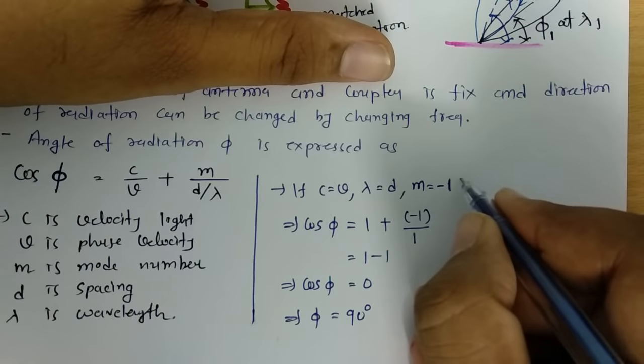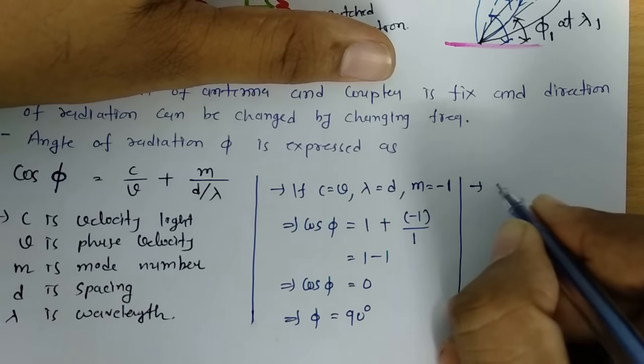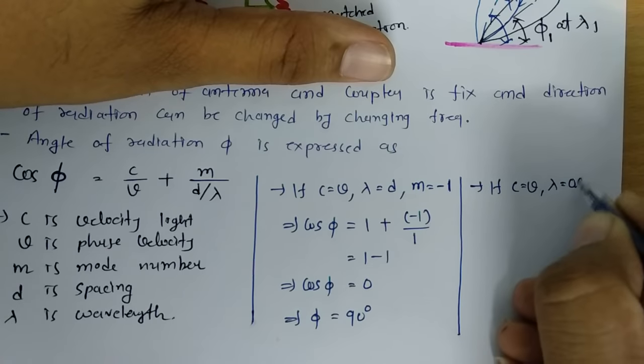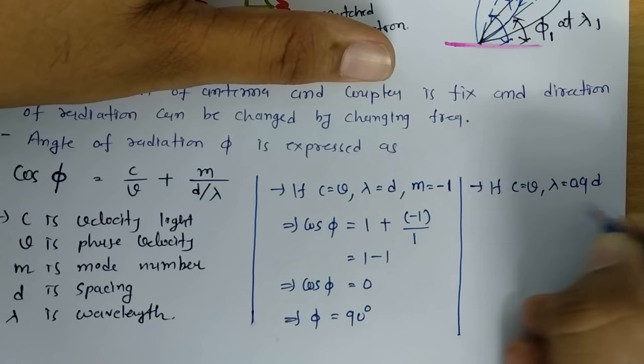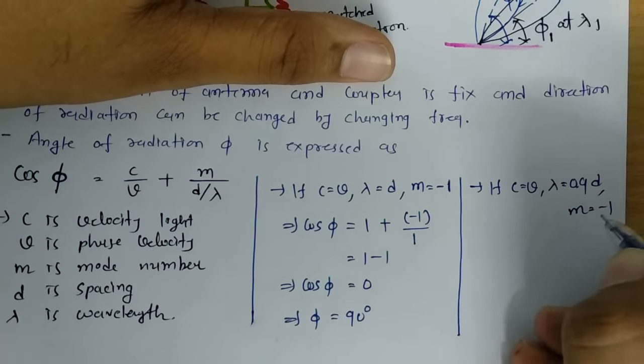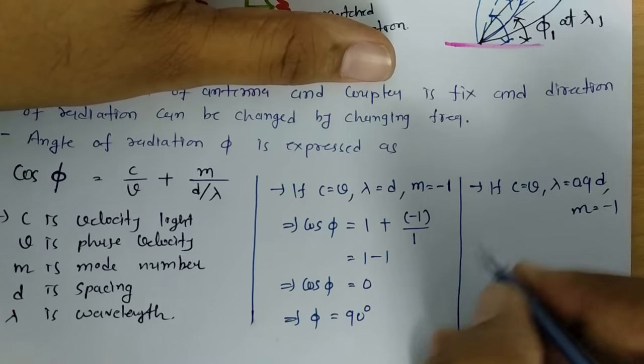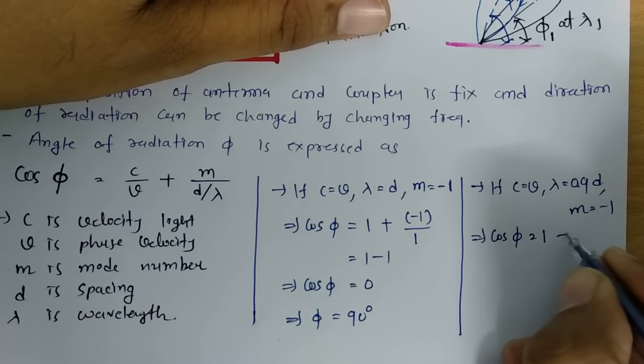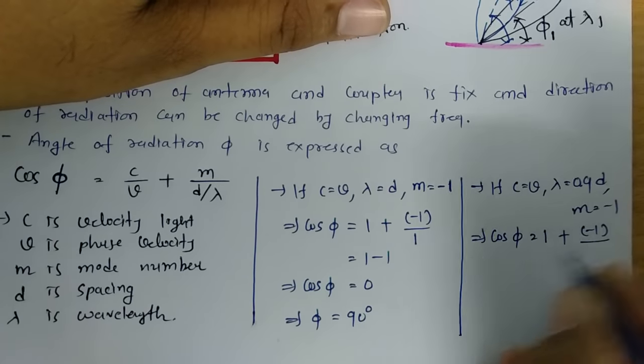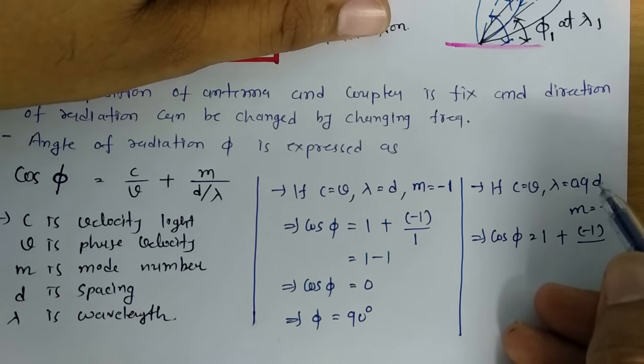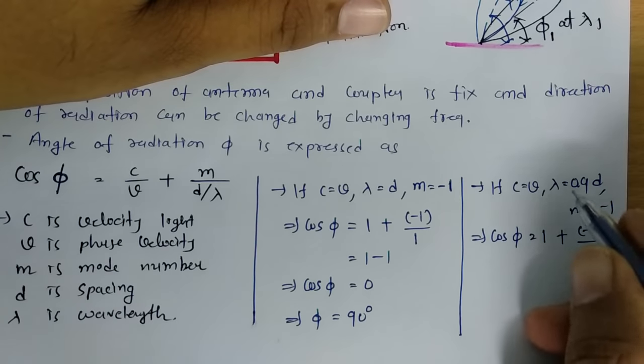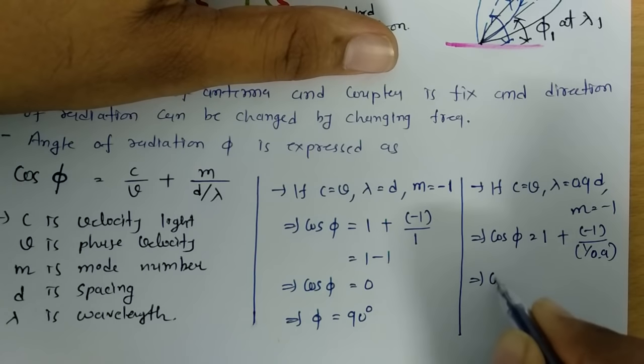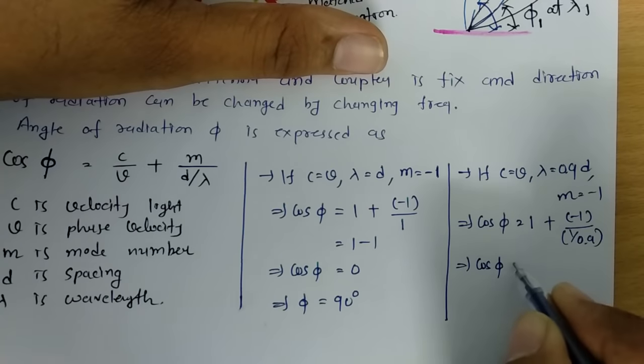Now let us consider second case. If I say for second case, C equals V, lambda equals 0.9D, and M equals minus 1. Mode number equals minus 1 in this case. In that case, cos(φ) equals C/V, that is 1 plus M equals minus 1 divided by D/λ. D/λ that is 1 divided by 0.9. Ultimately, this will be cos(φ) equals 1 minus 0.9.